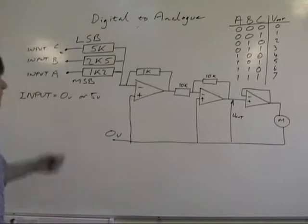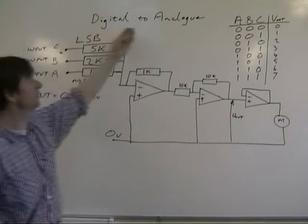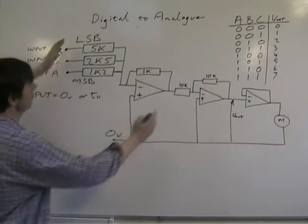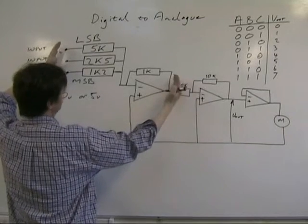Speed control of the DC motor. One method of doing it is to use a digital to analogue converter. Here's the converter here. It's changing the digital to analogue signal.